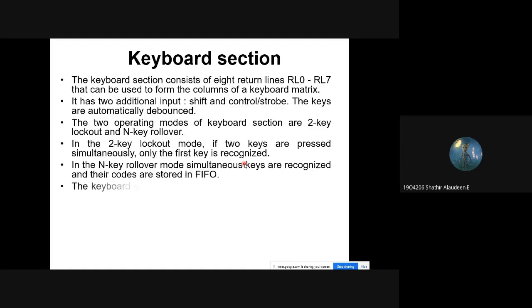The keyboard section includes an 8x8 FIFO buffer — first in, first out. The FIFO RAM consists of eight registers that can store eight keyboard entries. Each entry is then read in the order of entries. It has a debounce circuit that automatically debounces keys. It contains eight return lines RL0 to RL7, which return the status of whether a key is pressed or not.